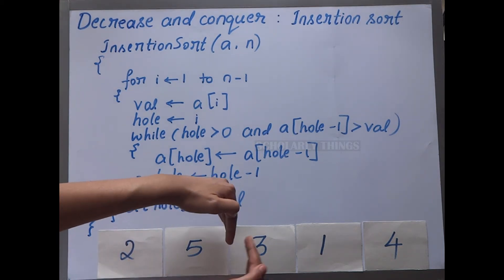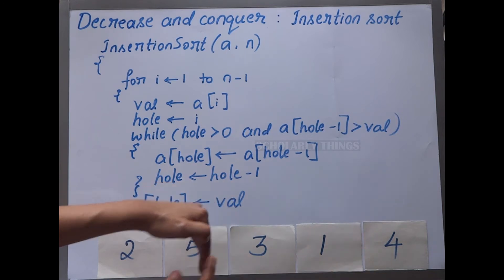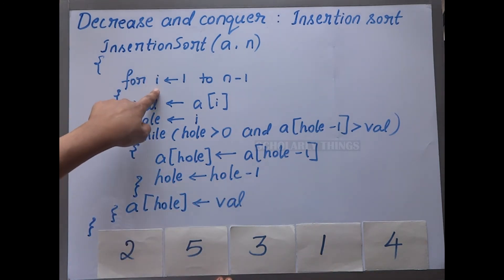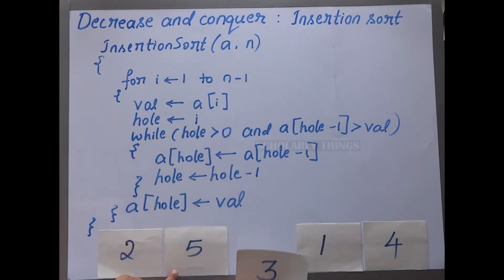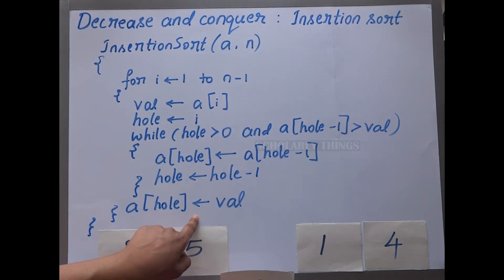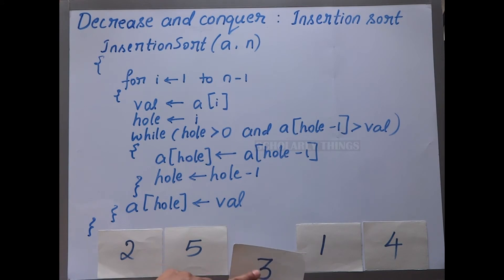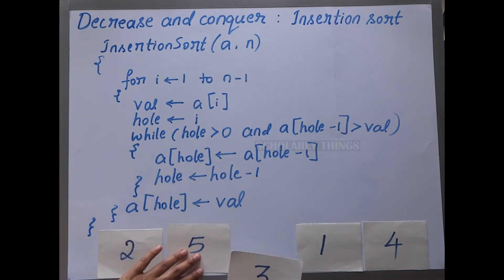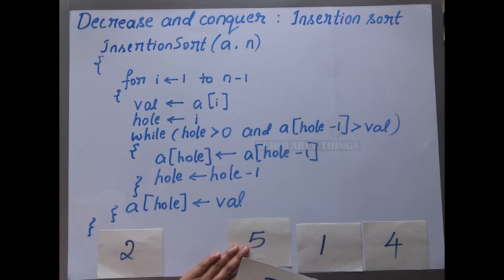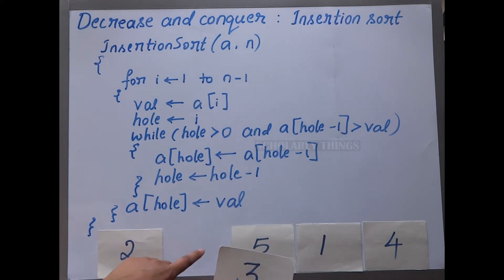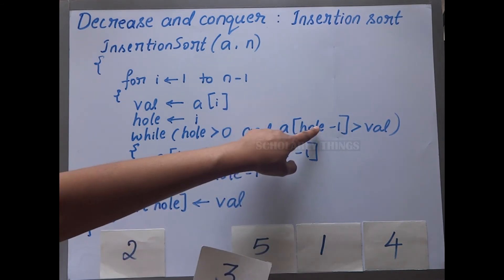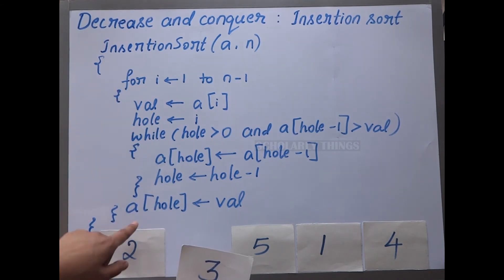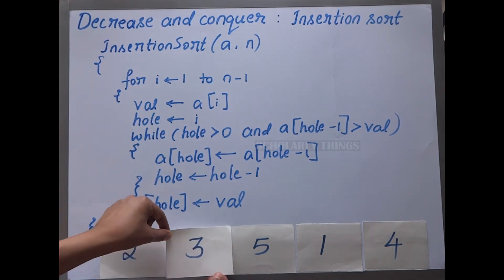Now 2 and 5 are sorted; 3, 1, and 4 are unsorted. We go to the next increment, i equal to 2. We take out value 3 and compare it with hole minus 1. Since 5 is greater than 3, we shift 5 to the right. Then we compare 3 with hole minus 1, which is 2. Since 3 is not greater than 2, the condition fails, we exit the while loop, and assign 3 to the hole position.